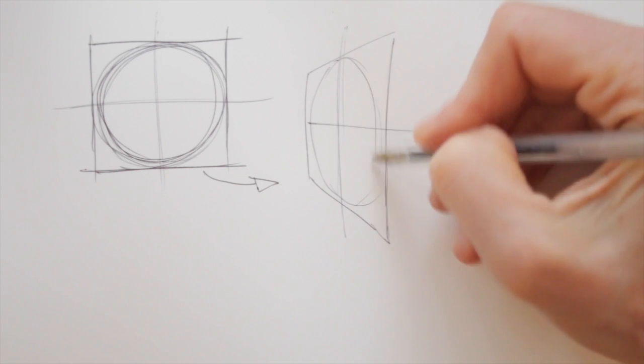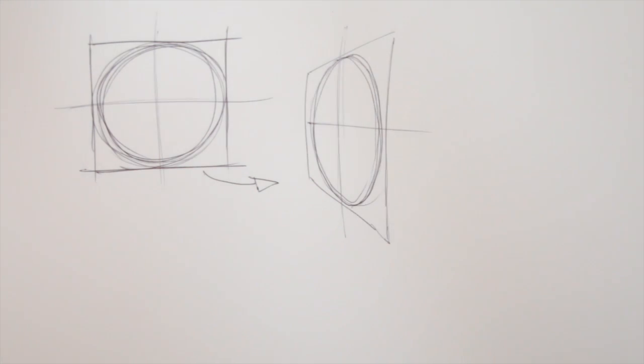Again, divide into four and draw your circle in it. See, now you've drawn it from a side view.